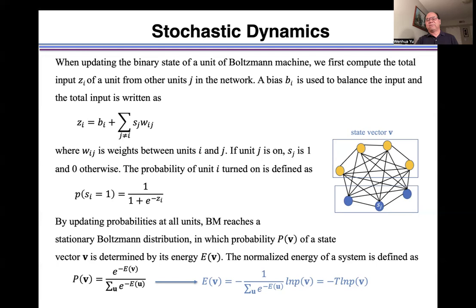To normalize the energy, a sigmoid function is defined as a Boltzmann distribution. From a Boltzmann distribution, we can get that energy E is equal to negative T times log p, where T is constant.